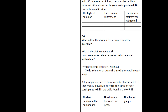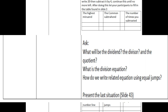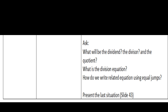Then present another situation: divide a 6-meter tying wire into 3 pieces of equal length. Ask participants to draw a number line from 0 to 6 and make 3 equal jumps. Then fill in the table from slide 42 — asking the last number on the number line, the distance between jumps, and the number of jumps. Ask: what is the dividend, divisor, quotient, division equation, and how to write the related equation using equal jumps.